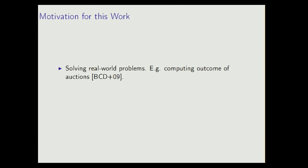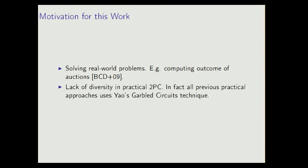This leads us to the first motivation for this work. We actually want to use this to solve some real problems. One thing that we've been very interested in in Aarhus is computing the outcome of auctions. I think we always have to mention that a few years ago some people in Aarhus actually implemented a secure auction for some sugar beet farmers in Denmark. So there are real people who care about these things.